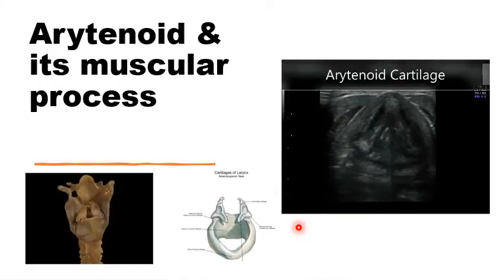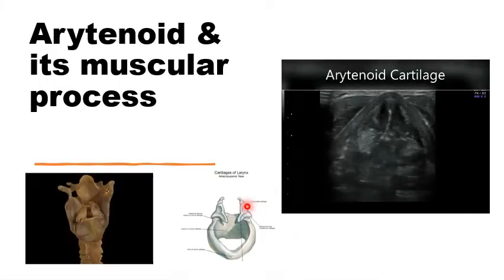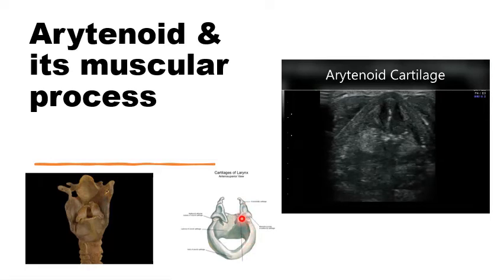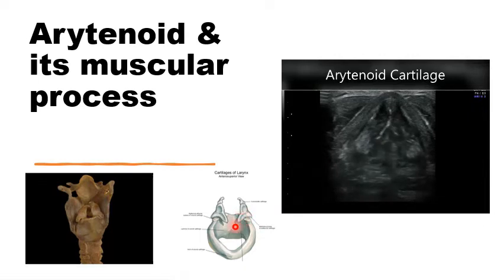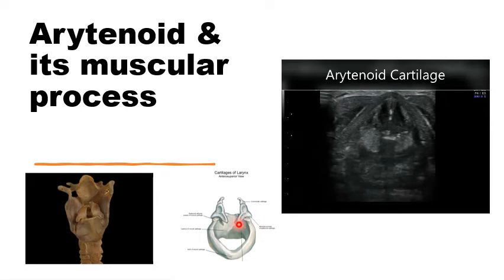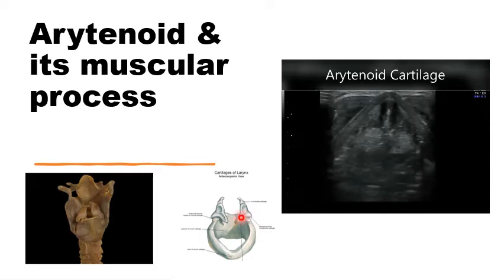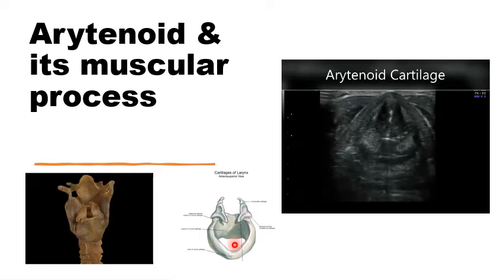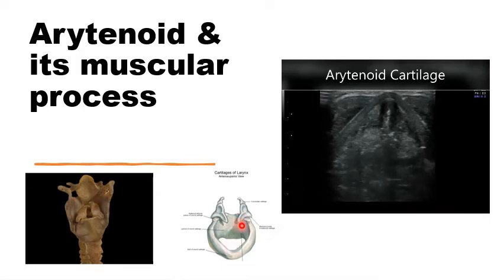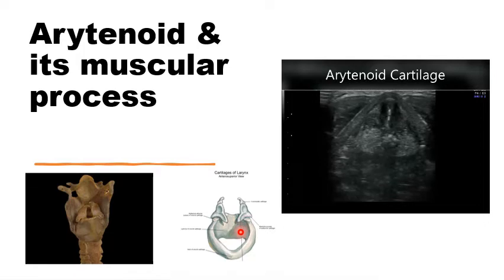From this interior view, you can see the arytenoid cartilage on top of the cricoid ring with its two prominent processes: the vocal process and the muscular process. To the vocal process, which forms the posterior part of the vocal fold, is attached the vocal ligament, and just lateral to this would be a part of the thyroarytenoid muscle — the vocalis muscle — that forms the bulk of the vocal fold.